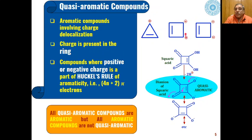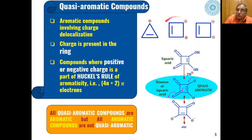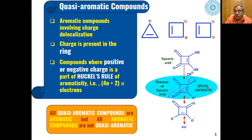Similarly, in this compound there are positive charges on both carbons that can be delocalized sequentially through the ring. The delocalization of charge takes place, and it obeys all other characteristics — that is 4n+2, cyclic nature, and planar structure. So this carbocation is an example of an aromatic compound. In such cases these types of aromatic compounds are called quasi-aromatic compounds.